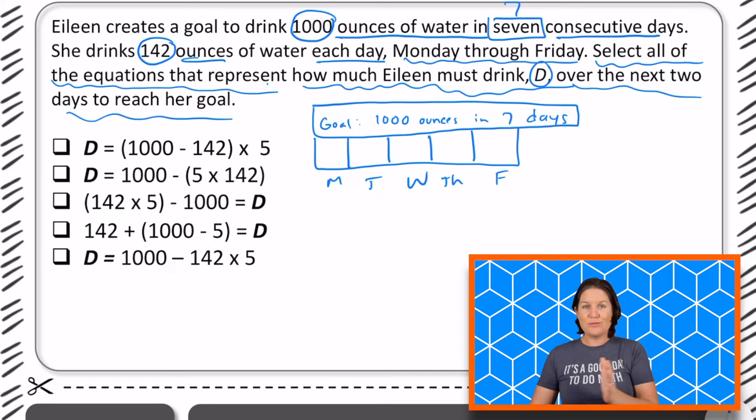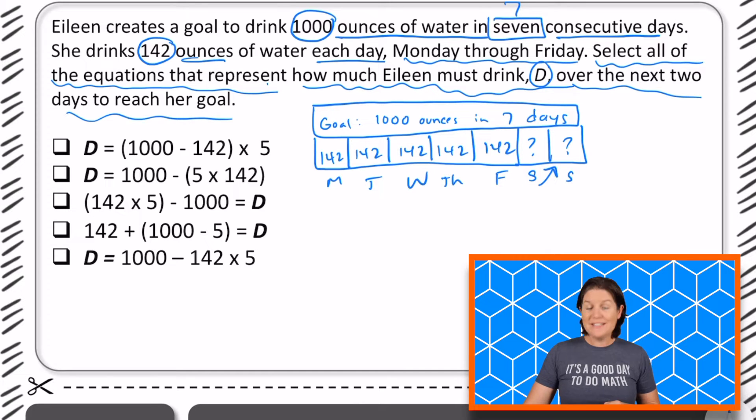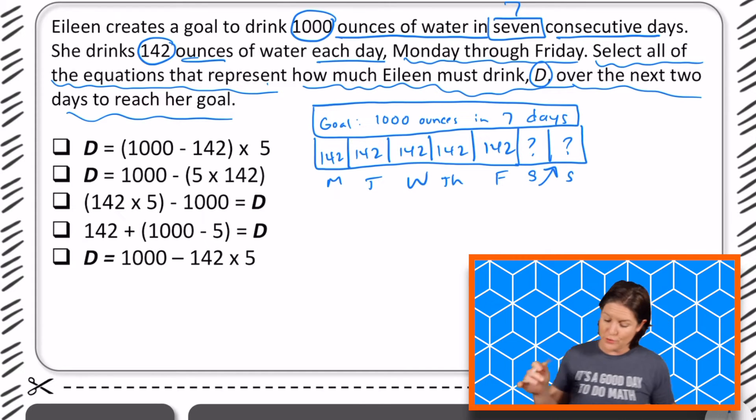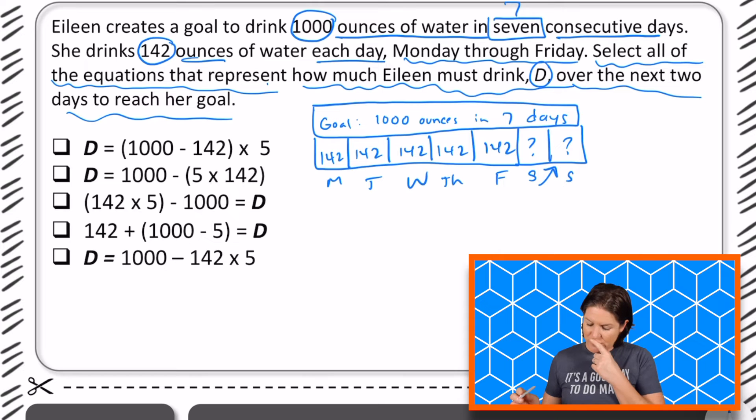And each of those days, Monday through Friday, in consecutive order, she drinks 142 ounces. I'm seeing numbers being repeated here. And we need to figure out, select all of the equations that represent how much she drank over the next two days. We still have Saturday and Sunday, and we don't know how much she drank those two days of water.